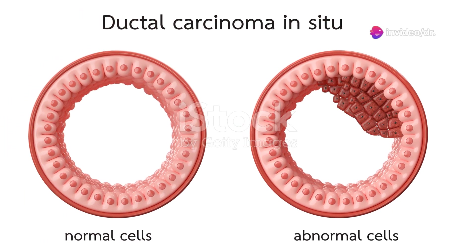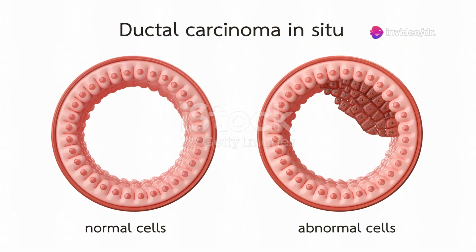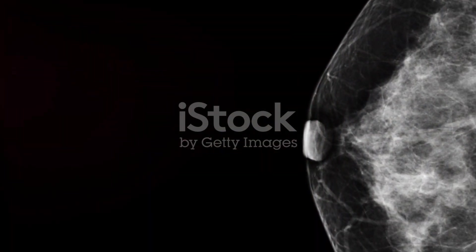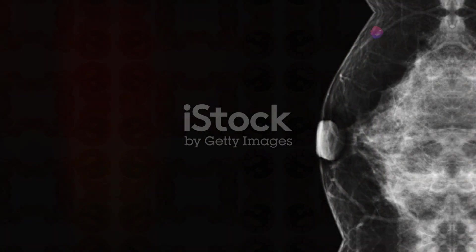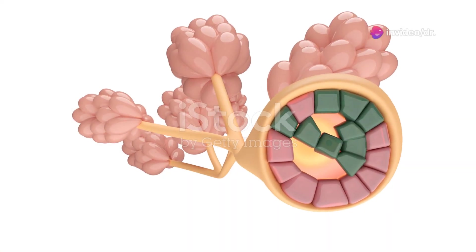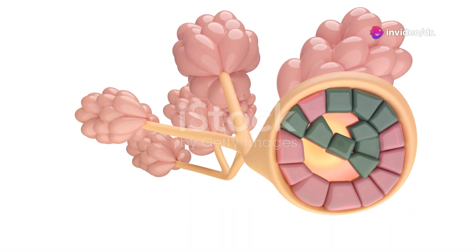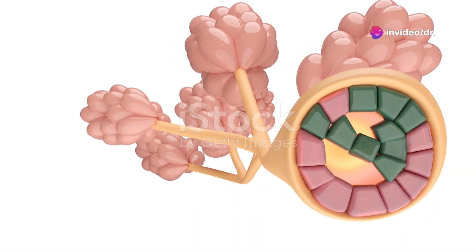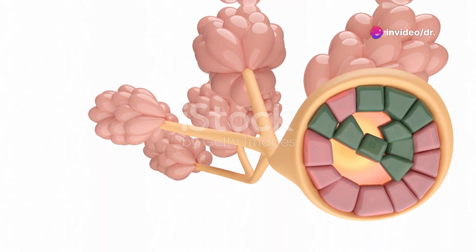Now we're going to talk about a few types of breast cancer, starting with DCIS — ductal carcinoma in situ. This is considered stage 0 breast cancer, and it means that abnormal cells are found in the lining of the milk duct but they haven't spread beyond that. Early detection is key.